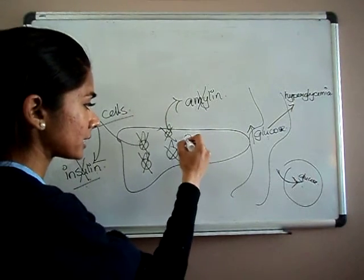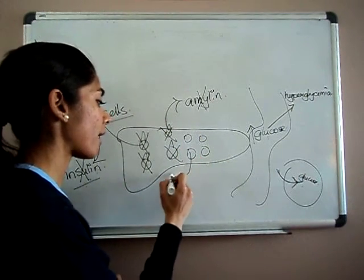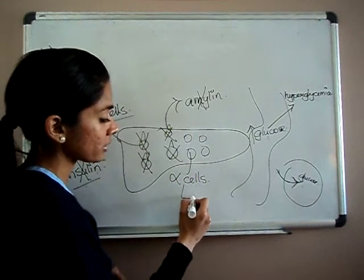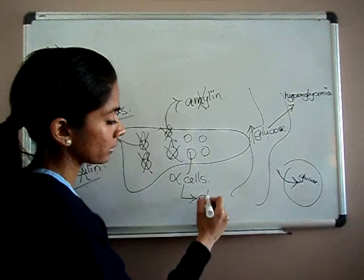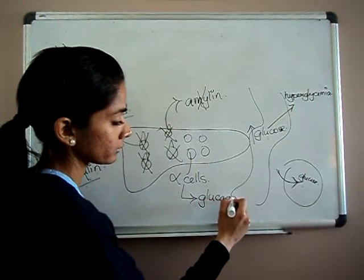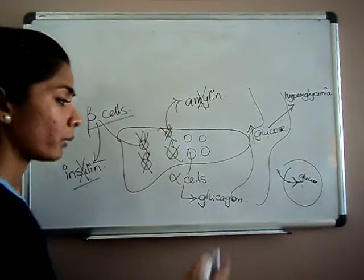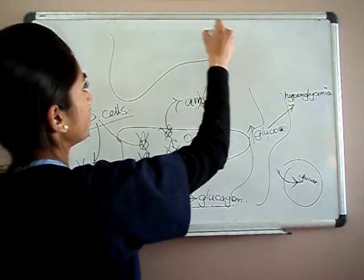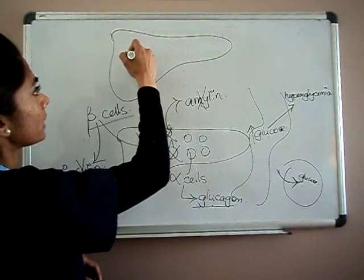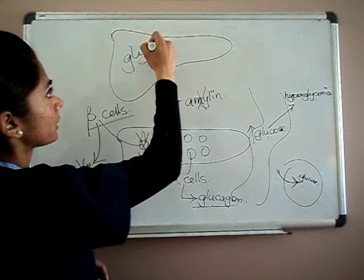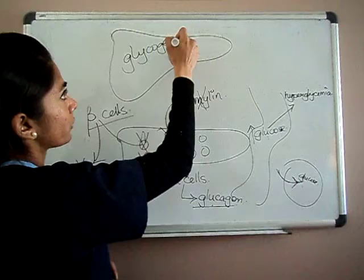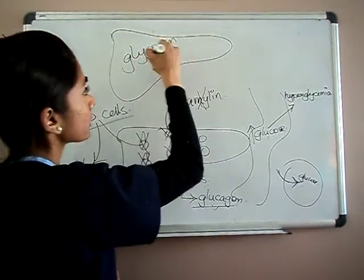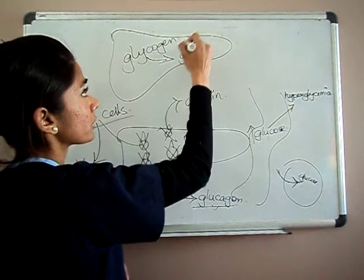There's another set of cells on the pancreas, and these are called your alpha cells. Alpha cells produce a hormone called glucagon. What glucagon does is that, if this is your liver and this is the glycogen stores of your liver, glucagon acts on the glycogen stores to produce glucose.